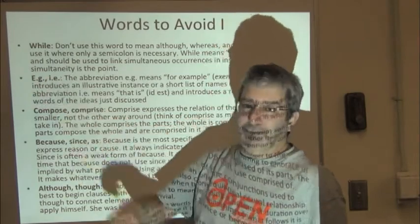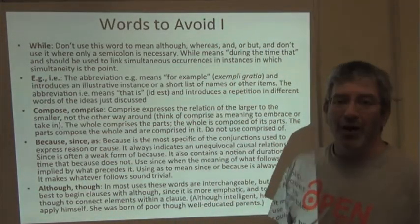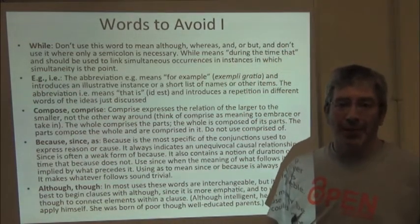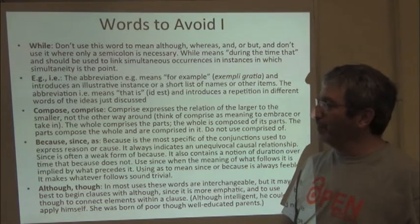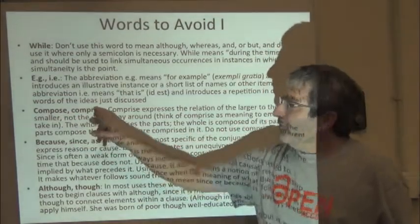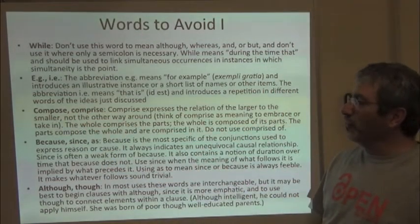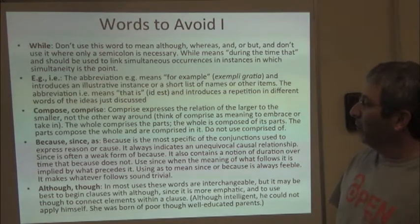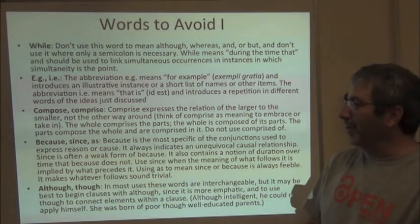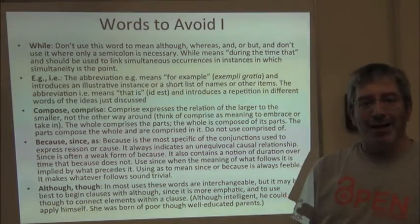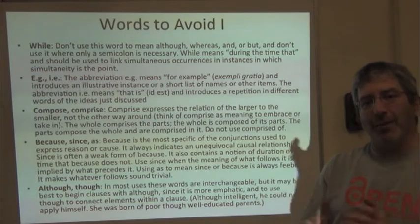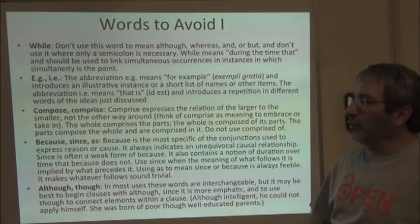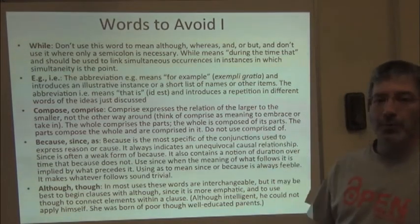Notice that both words in both of these abbreviations are abbreviated, and so both of them should have periods. Whether there's a comma after them depends on the specific journal's style. Then we get into the pair of words compose versus comprise. Comprise is basically saying 'including' — comprising is embracing or taking in, whereas composing is making up. One is the whole encompassing the parts, and the other is the parts making up the whole. Don't use 'comprised of.'